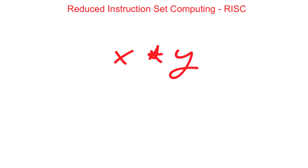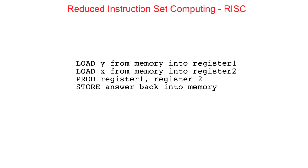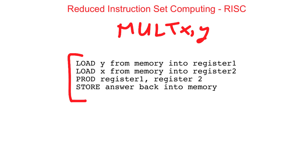So now the compiler will have to generate more lines of low level machine code. For example, the previous machine instruction under the CISC system of MULT XY might now have to become: load y from memory into register 1, followed by load x from memory into register 2, a PROD command — which is a low level machine version of multiplying the contents of register 1 and register 2 together — and then store the answer back into memory.